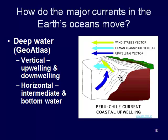Downwelling is the opposite, where you have water sinking down into the ocean. Water that is very dense and very cool sinks to the bottom. There are no wind currents driving this one — it's just density driven. Then we have horizontal movement of intermediate and bottom water as well. So we might have surface water moving in one direction, but deep down inside the ocean, water can be moving in a different direction.